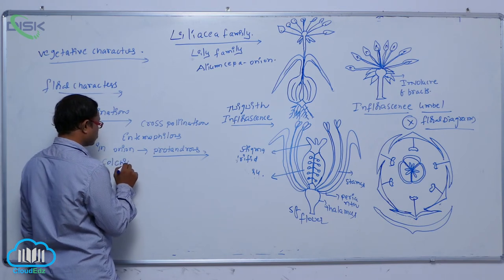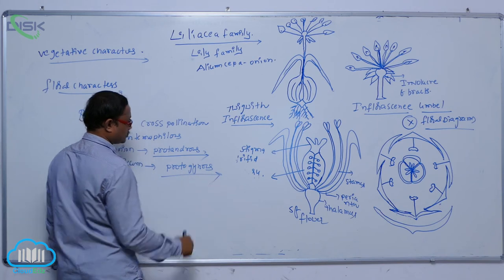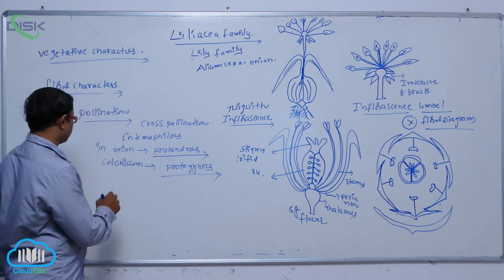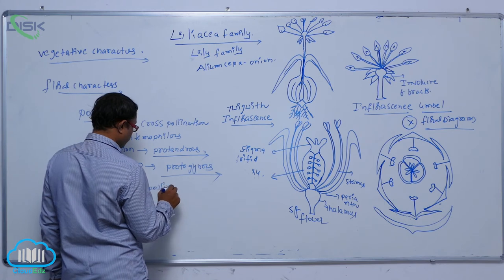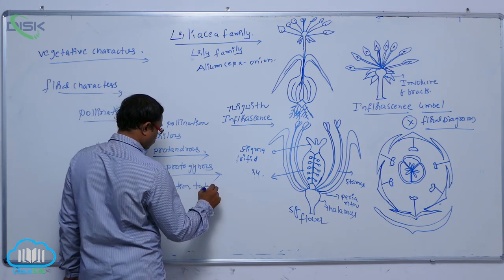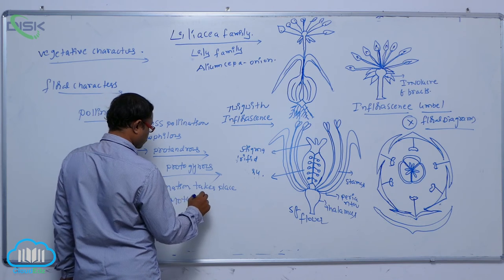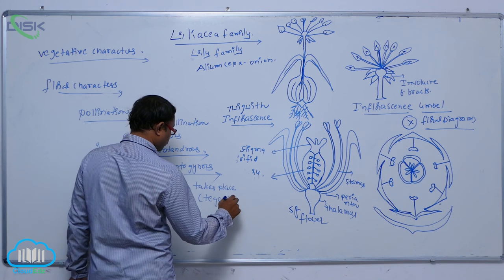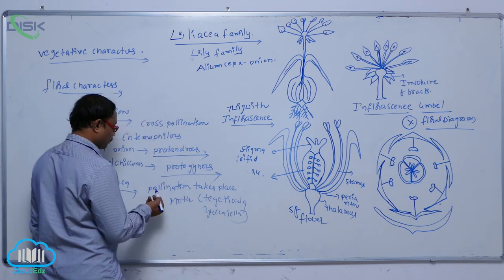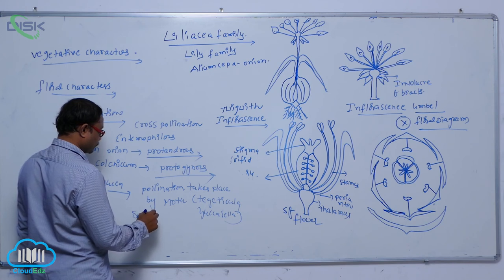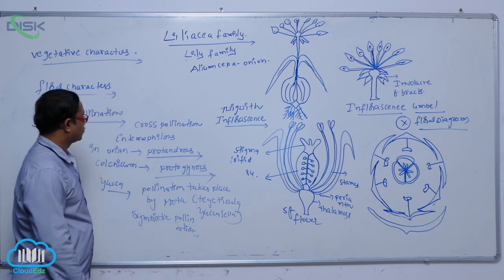In Colchicum, it is known as protogynous. In Yucca, pollination takes place by a moth — Tegeticula yucca, an insect name — it is involved in the pollination. That is known as symbiotic pollination.